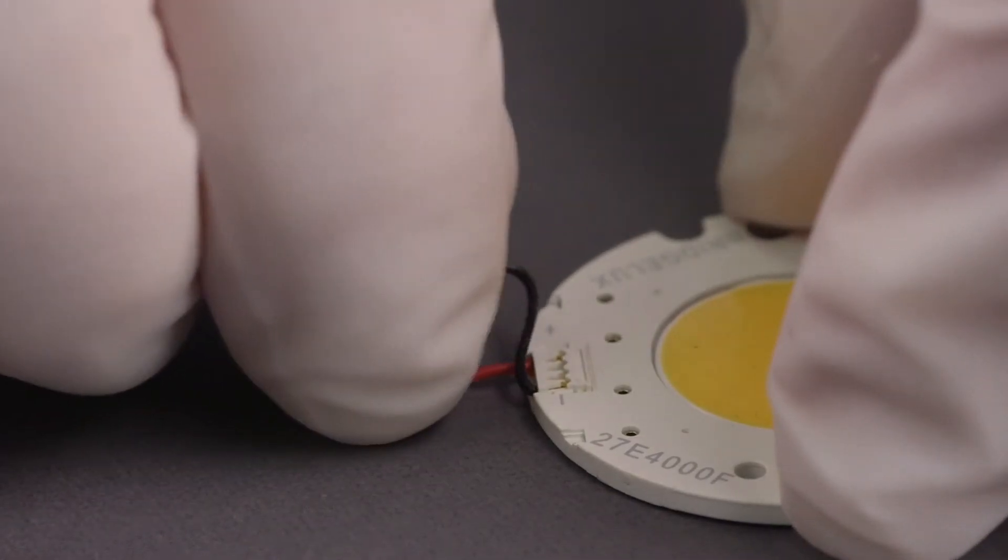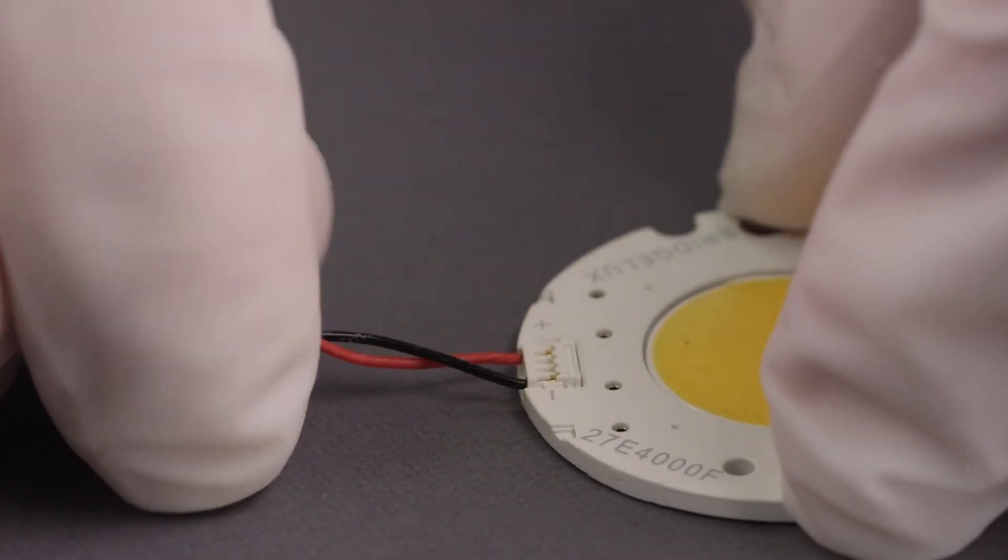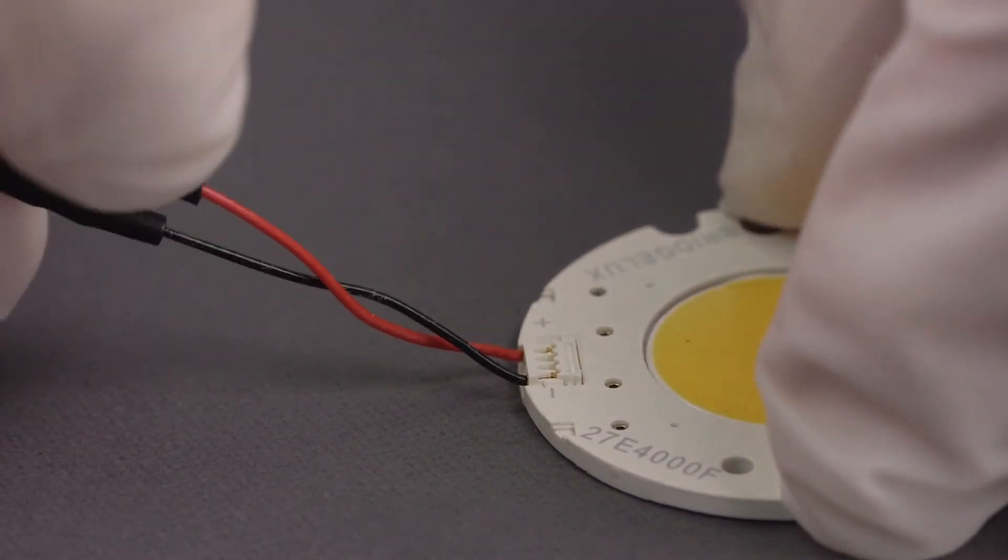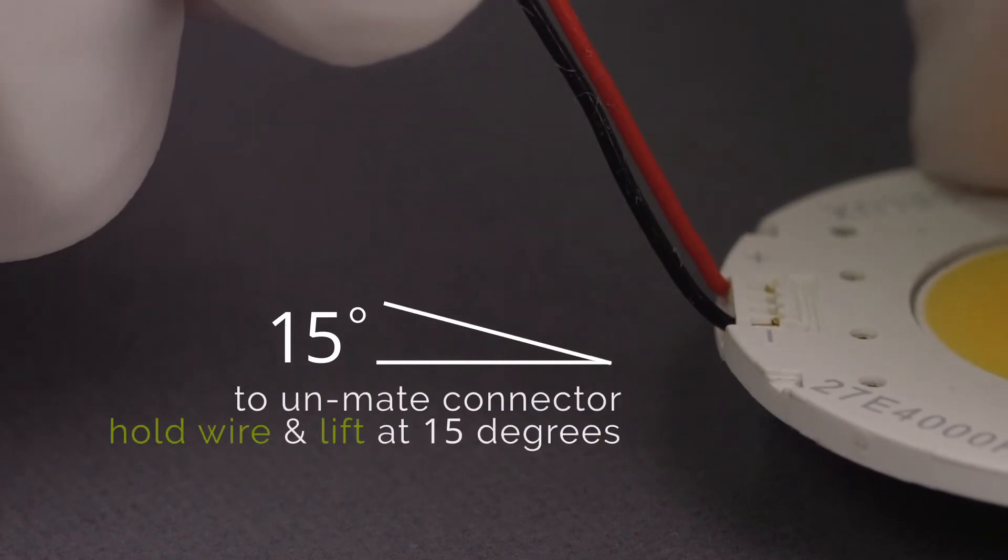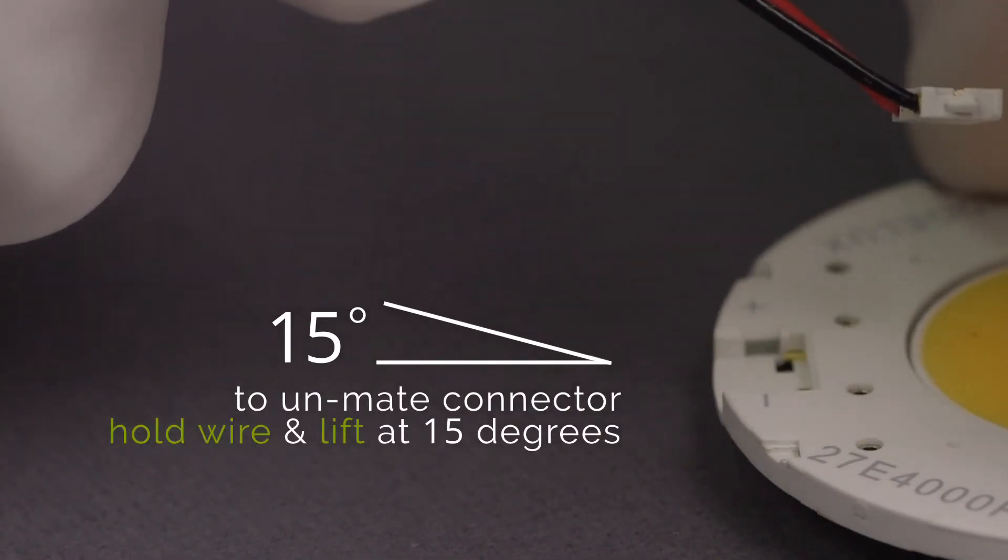The connector will not unmate if pulled horizontally. To unmate the connector, simply hold the wires and lift at a 15 degree angle. The connector will unmate rapidly from the outer edge of the array first followed by the interior edge.